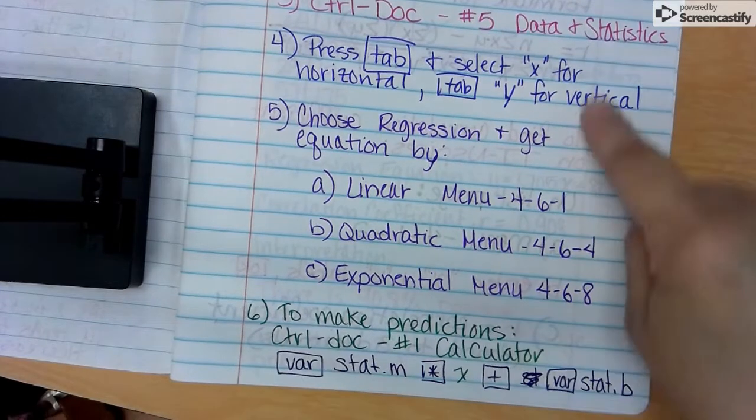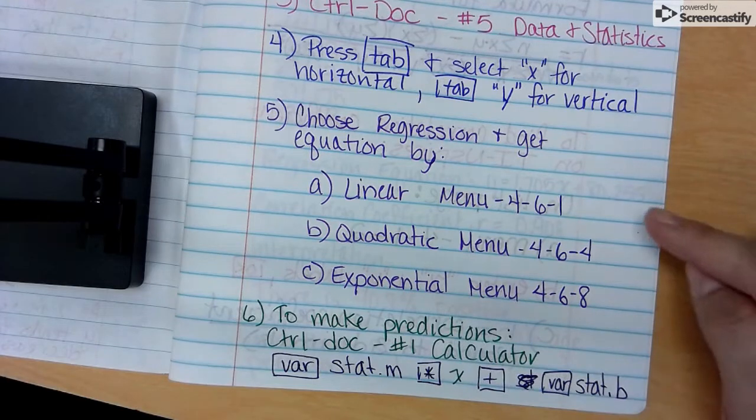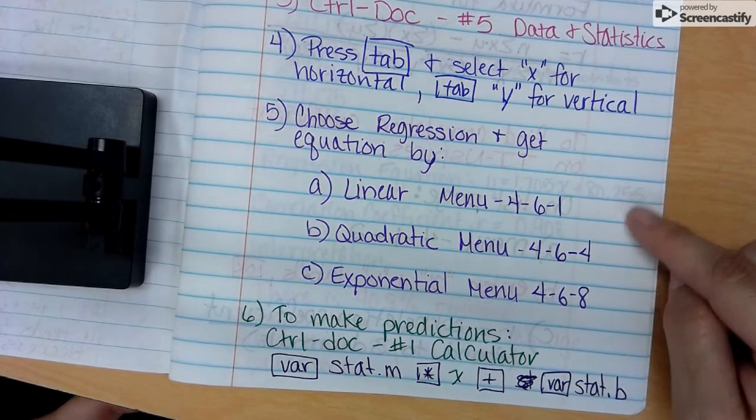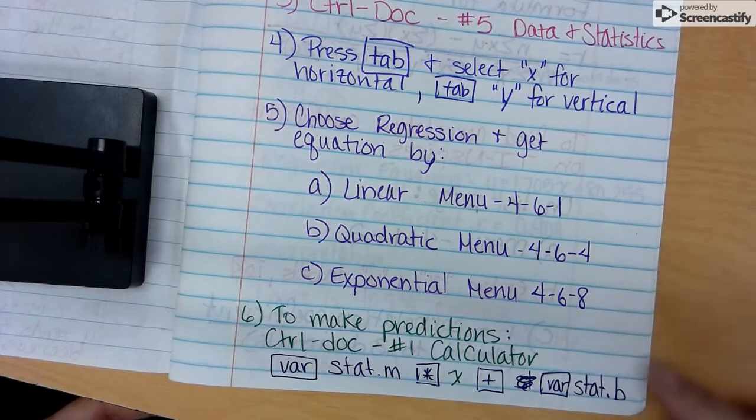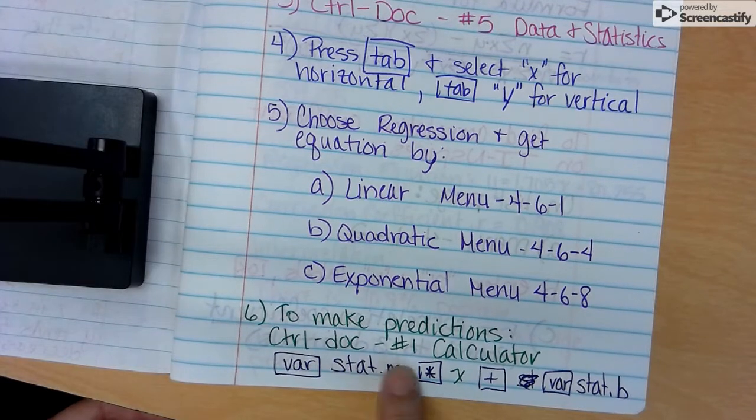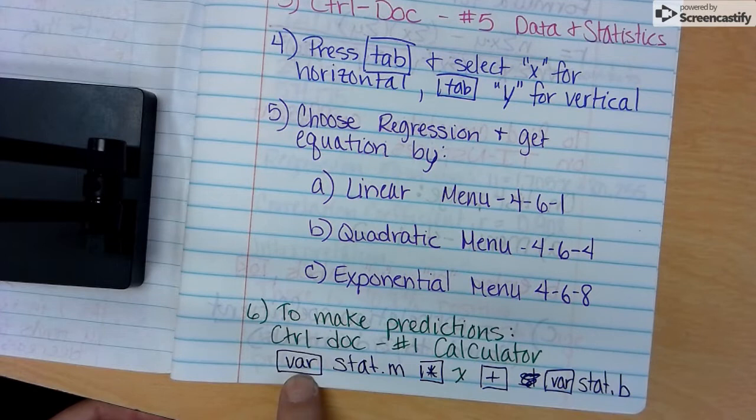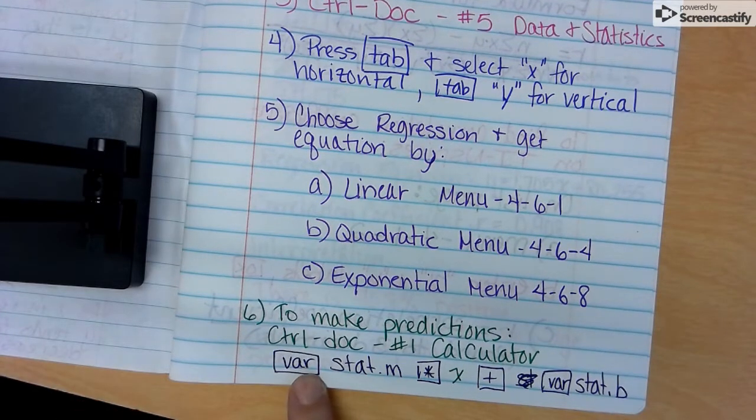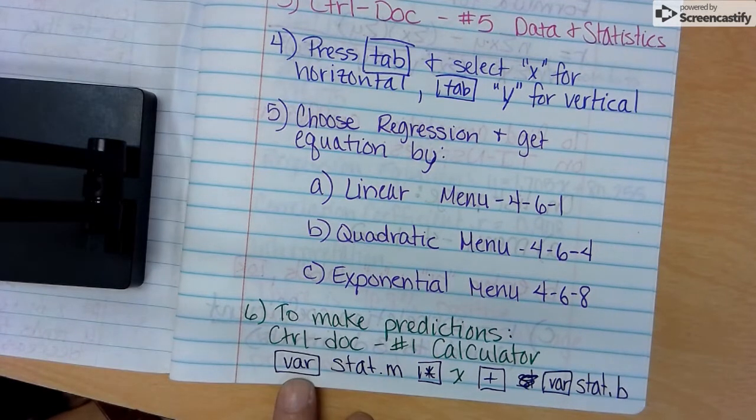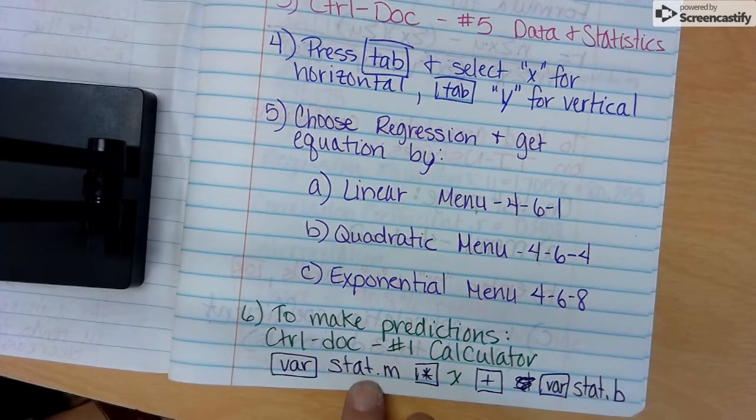If it appears to be kind of a check mark, either descending or ascending, then we would be doing an exponential and pick 4-6-8. For statistics we will simply use choice A. For my Math Models classes we do all three. To make predictions, we are going to push Control Doc and choose number 1 for the calculator.